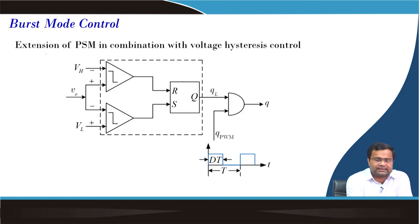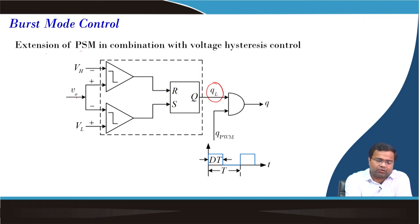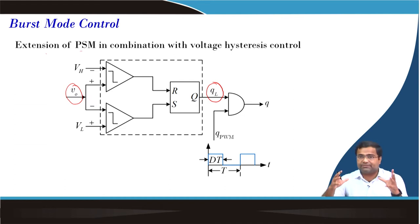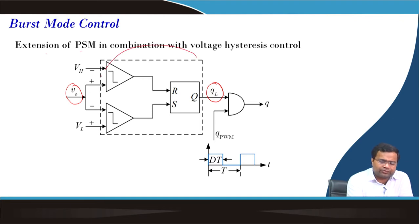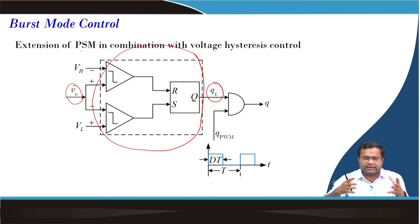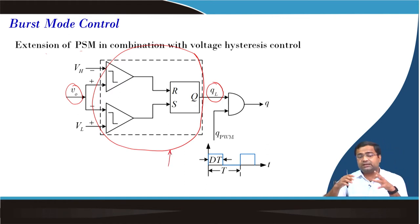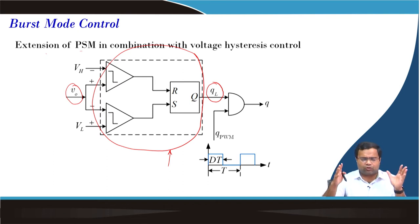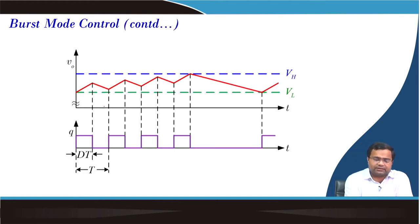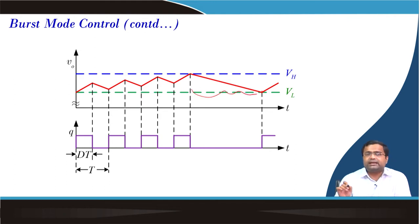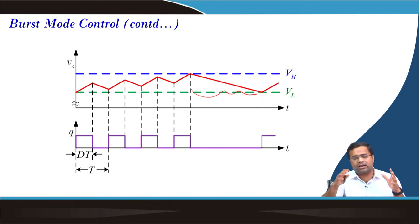Burst mode control is an extension of pulse skipping modulation. Instead of a pure comparator that compares output voltage with reference voltage, a hysteresis comparator is introduced. The operation becomes asynchronous: when the inductor current hits the upper band, irrespective of the clock, it turns off; it turns on again when it hits the lower limit. This asynchronous behavior makes it difficult to predict the power spectral density, which is one drawback of burst mode control.